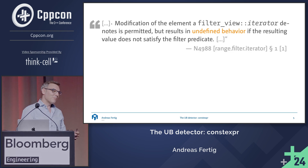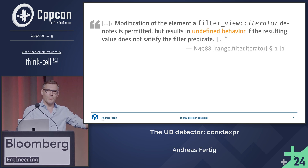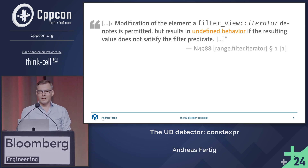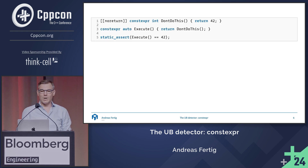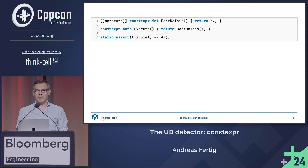You might say I wasn't precise enough — you thought about language UB, everybody talks about language UB in these cases and not so much about library UB. And I'm sure we can have zero language UB in the language, right? Well, it might be an odd case, but look at this. I have this function called 'don't do this' — intentionally named like that. It returns the integer 42, but it's also marked as noreturn. It's a constexpr function.